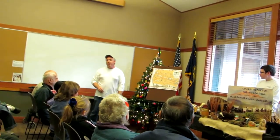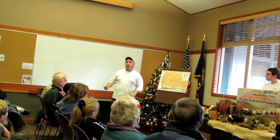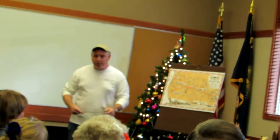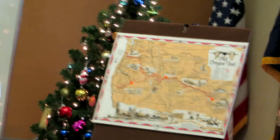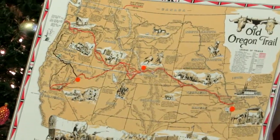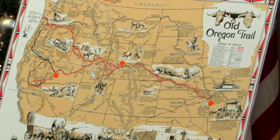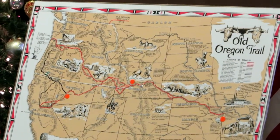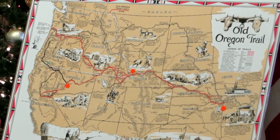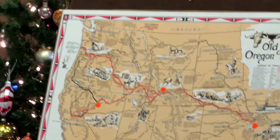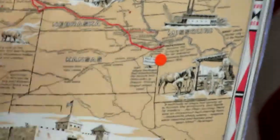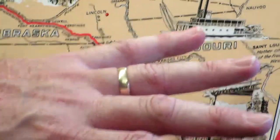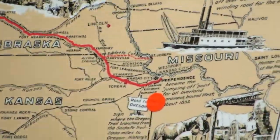The original Oregon Trail started way back in 1843 in a little town called Independence, Missouri. The entire reason that the Oregon Trail originated was based on a bunch of trapping and trading trails established in the early 1800s. It also followed a lot of the original Native American trails that traversed from the midsection of the United States all the way out to the west coast.